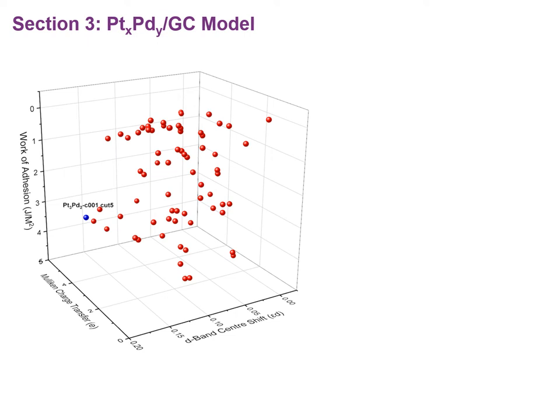As indicated by the blue dot, the platinum-3 palladium-2 on glassy carbon cut 5 performed the best out of the 72 different interfacial models. Using this information and the best performing interfacial models, the bonding was looked at more closely and could then be used to describe how the bonding occurs.